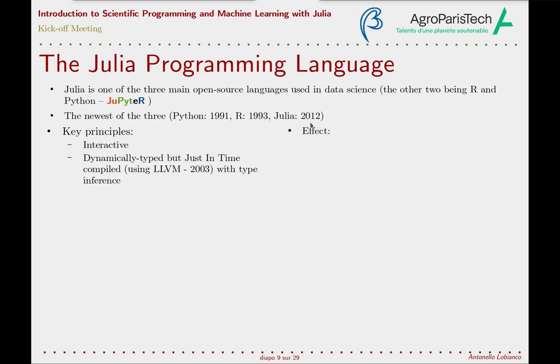Julia, instead, was designed after just-in-time compilation became available and was really built with JIT in mind. This means you don't need to worry about language features that are incompatible with compilation. In particular, any type — not only the primitive types provided natively by the language core, but also types that you as the programmer define when you create a new structure or class — can be compiled.